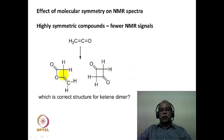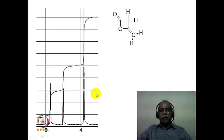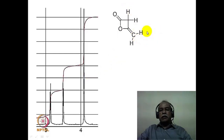Essentially, the difference between these two structures is that the lactone is a highly symmetrical structure, whereas the diketone is an unsymmetrical structure. The actual spectrum of ketene dimer shows an unsymmetrical pattern. In other words, it has three different chemical shift values: two hydrogens corresponding to one chemical shift value, and the hydrogen trans to oxygen and the hydrogen cis to oxygen each coming at two different chemical shift values.